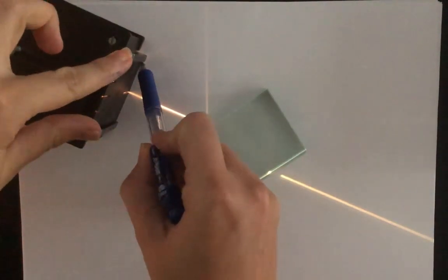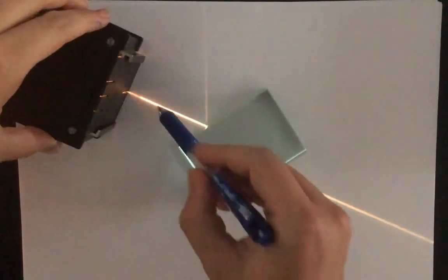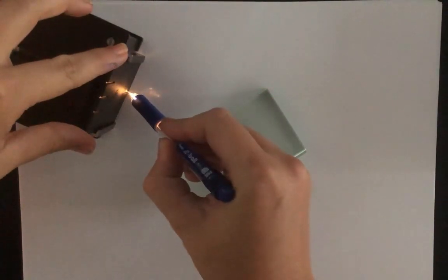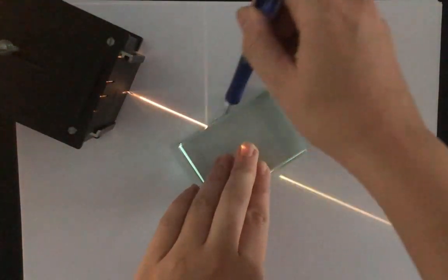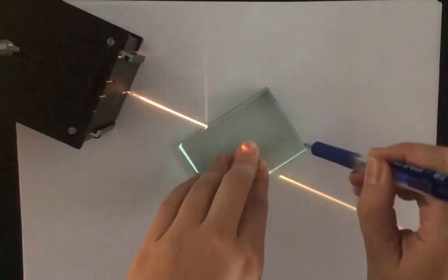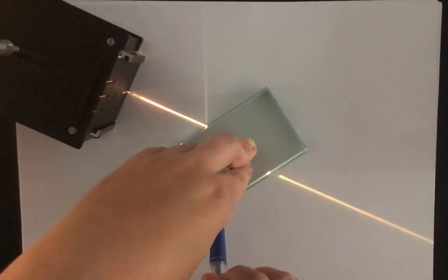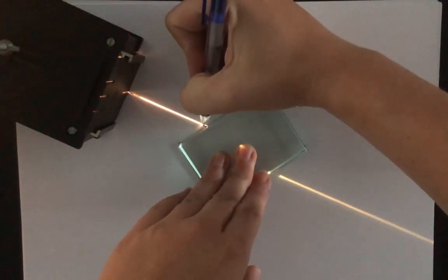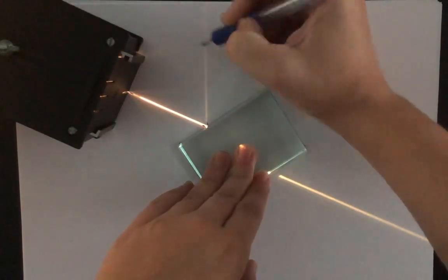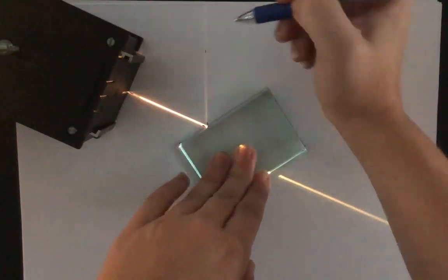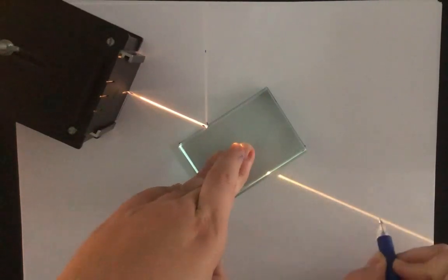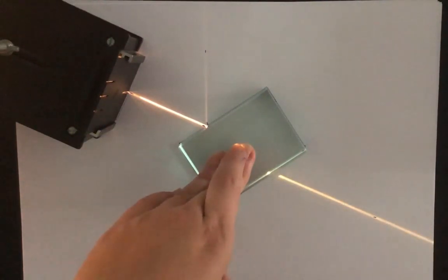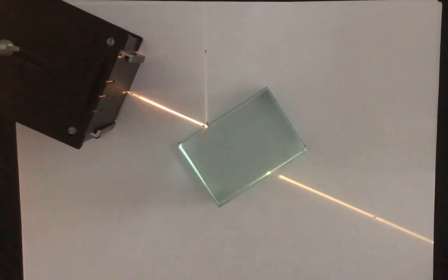Just like last time, we are going to mark on our page where everything was set up. I'm going to draw a line to show where my light box was and where the incident ray starts. I'm going to trace around my glass prism. I'm going to show where the light hits the prism, the reflected beam, and the refracted beam as well. Now that I've done those things, I can remove my equipment and label the diagram accordingly.